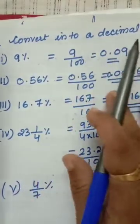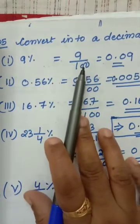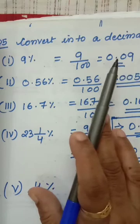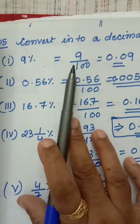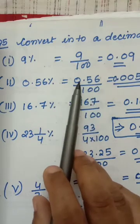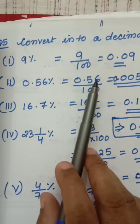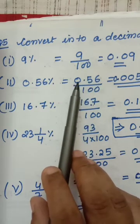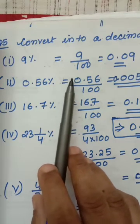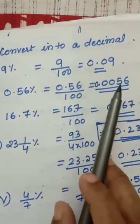Question number 5: convert into decimal. 9 percentage — percentage means divided by 100. If denominator is 100, from the right side take 2 digits and put a point before those 2 digits. 0.56 percentage — percentage means divided by 100. Already a point is there. You want to divide by 100, so from the point you count 2 digits. There is 1 zero already, so you add 1 more zero — then you get 2 digits. Put a point before them: 0.0056.